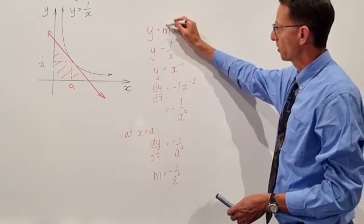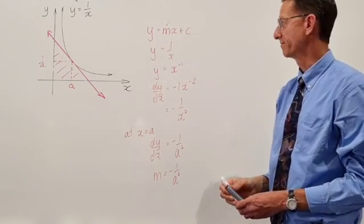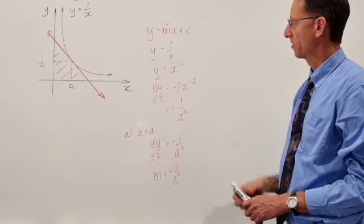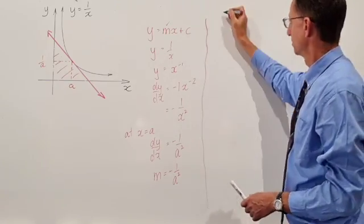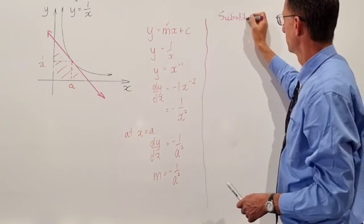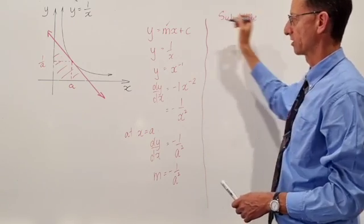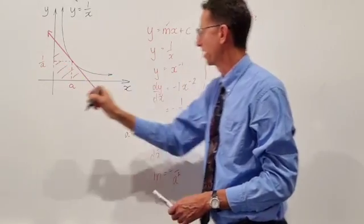So that gives us the gradient in the equation for the line. Now let's have a look at how we find the y intercept. So what we'll do is we'll substitute in a point of that line. So we've got this value right here. We'll substitute x equals a.